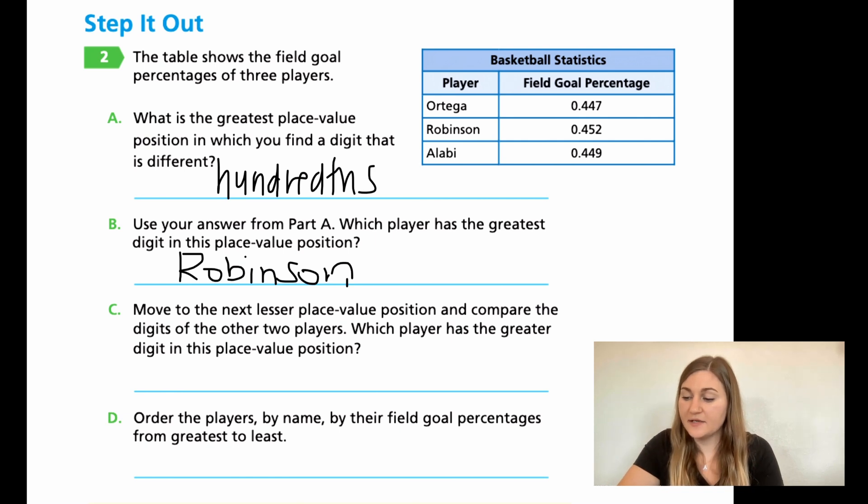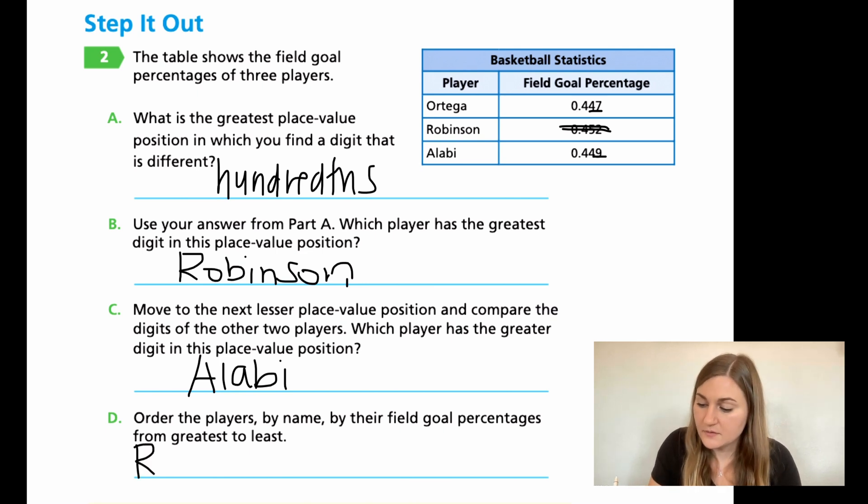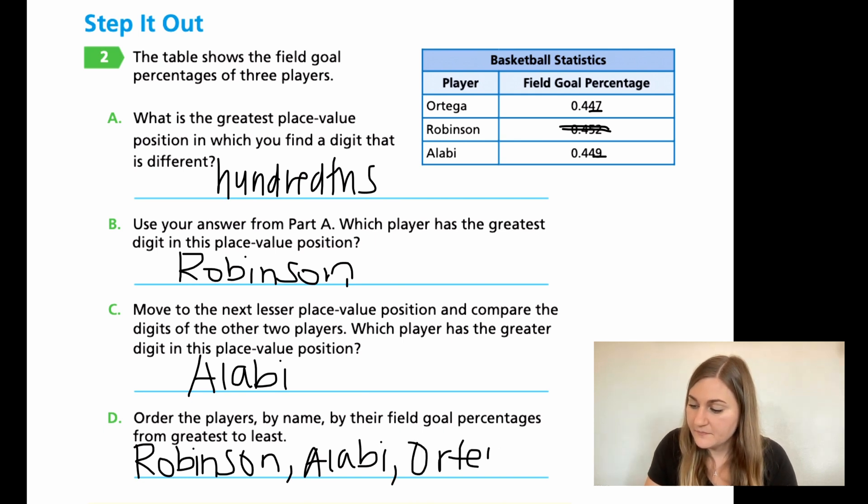And then C, it says move to the next lesser place value position. So now we're moving to the thousandths and compare the digits to the other two players. So now we're looking at the four and the seven and the four and the nine, because we know this one's already out because we already used it. So which player has the greater digit in this place value, the four and the seven or the four and the nine? Four and the nine is going to be bigger. So that player is going to be Alibi. Now we want to order the players by name, by their field goal percentages from greatest to least. So we know the biggest one was Robinson. And then we found out after that that was going to be Alibi. Then the one after that is Ortega. That was the lowest percentage.